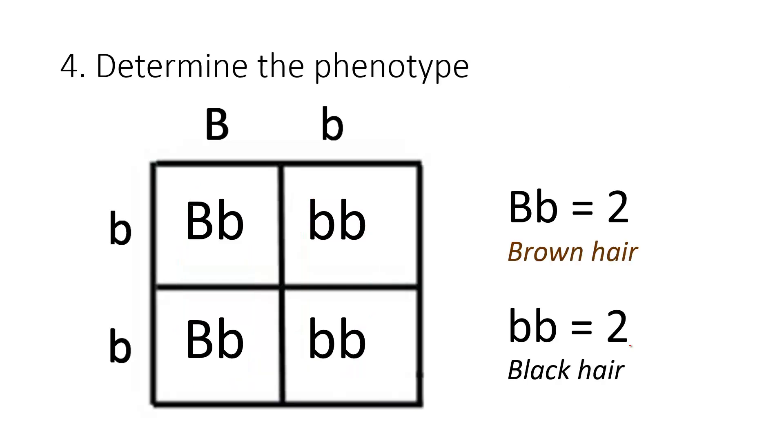My next step, step four, is to determine the phenotype, meaning what is the actual appearance. I remember back that brown hair, big B, is dominant to black hair, which is lowercase b. So there's two that have brown hair, these two have brown hair, and there's two that have black hair, which are these two.